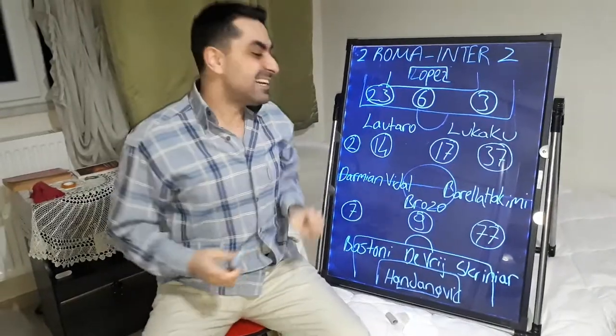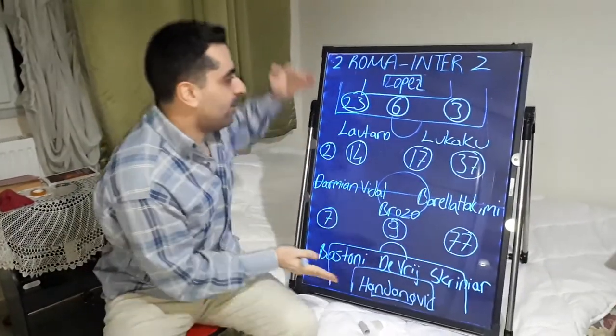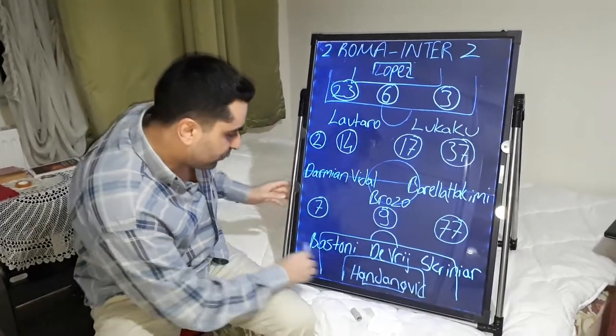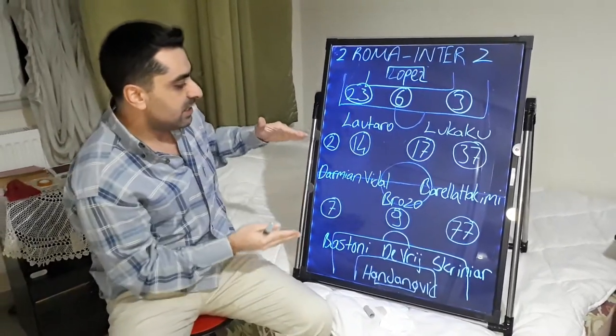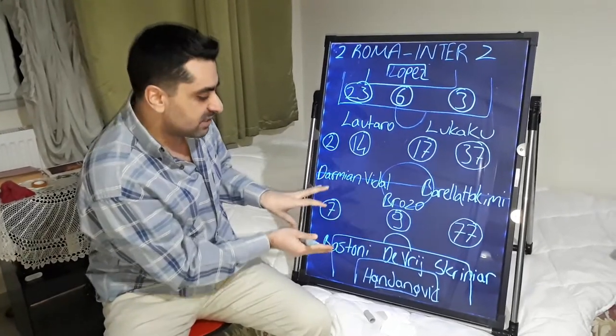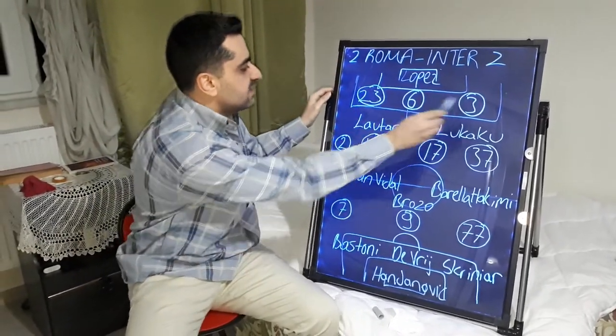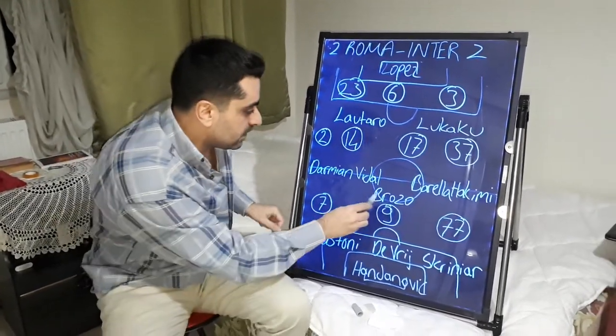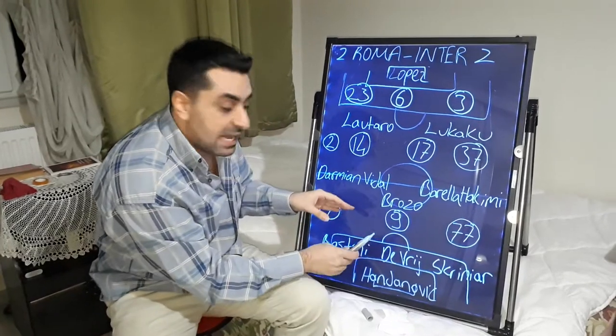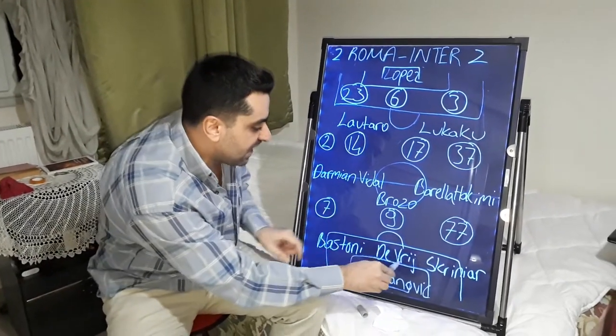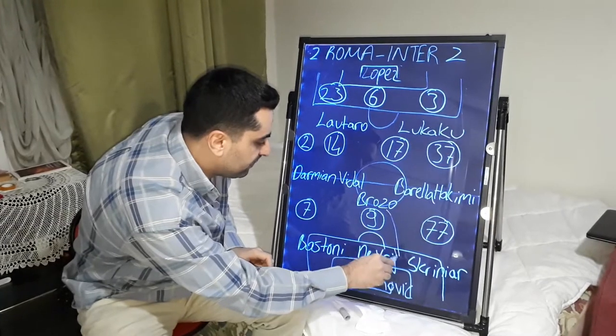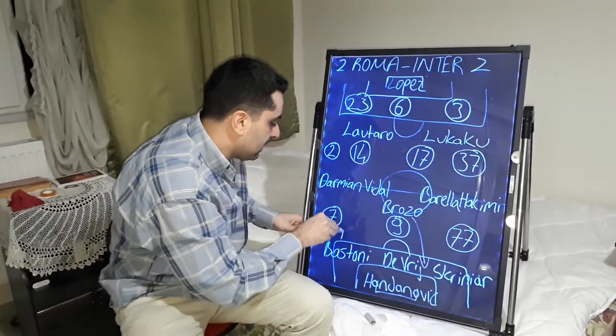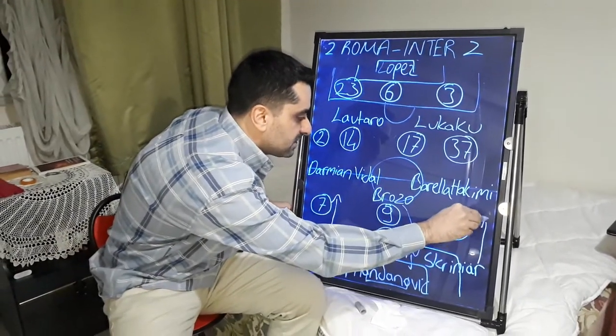And secondly, I want to talk about Inter's tactics. Inter played in 3-5-2 formation. I write Inter's players and just Roma's players numbers here. In Inter, Brozovic sometimes came between the defence line. He came back centre of the defence and Skriniar and Bastoni came to midfield from the wings together.